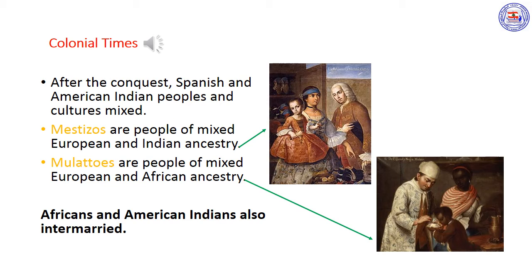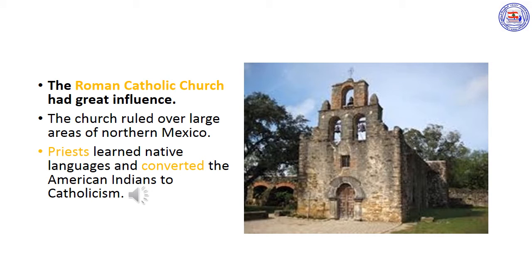Spaniards called people of mixed European and Indian ancestry mestizos. When Africans were brought to America as slaves, they added to this mix of peoples. The Spaniards called people of mixed European and African ancestry mulattoes. Africans and American Indians also intermarried. Life in colonial Mexico was greatly influenced by the Roman Catholic Church. Large areas of northern Mexico were left to the church to explore and rule. Church outposts known as missions were scattered throughout the area. Priests at the missions learned native languages and taught the Indians Spanish. They also worked to convert the American Indians to Catholicism.